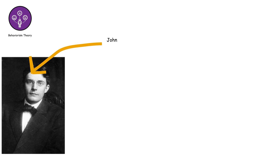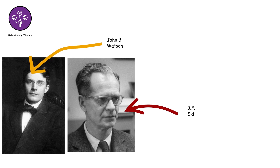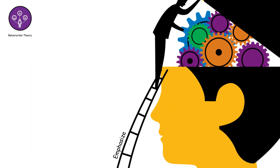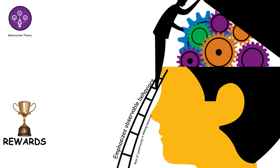Behaviorism theory, founded by John B. Watson and later expanded by B.F. Skinner, emphasizes observable behaviors and the role of conditioning in shaping behavior. It suggests that behavior is learned through environmental stimuli, such as rewards and punishments.